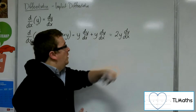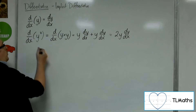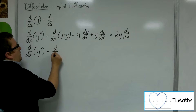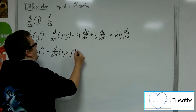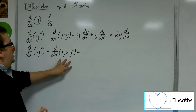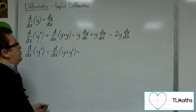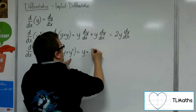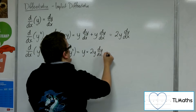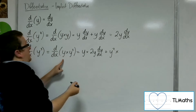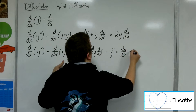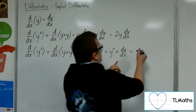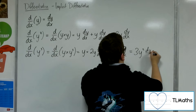So y² differentiates to 2y·dy/dx. Then what would y³ differentiate to? I treat that as y times y². Using the product rule: first times the derivative of the second — y² differentiates to 2y·dy/dx — gives 2y²·dy/dx, plus second times derivative of first gives another y²·dy/dx, leaving us with 3y²·dy/dx.